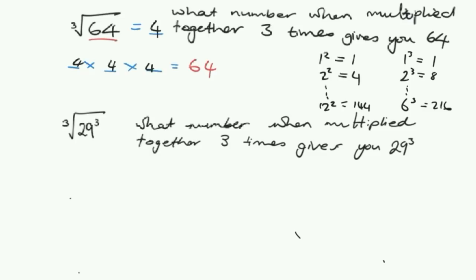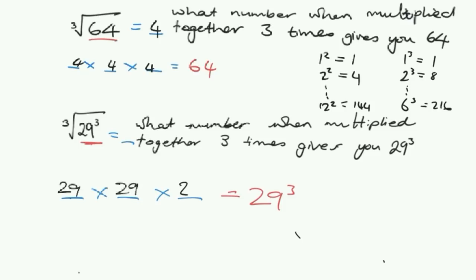Here's a funny one — what's the cube root of 29 cubed? We want to know what times what times what equals 29 cubed. Your knowledge of exponents should tell you that 29 cubed is just 29 times 29 times 29. So the cube root of 29 cubed is just 29.